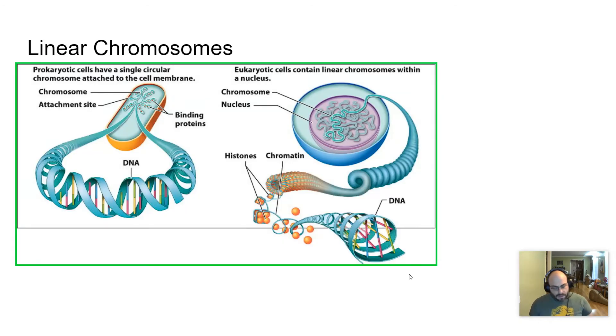Another example is the example of linear chromosomes. The prokaryotic cells have the circular chromosome and eukaryotic cells have a linear chromosome. We drew all those X-shaped chromosomes, talking about that when we talked about cell division. And so that's what we mean by a linear chromosome. It's not a single circle.